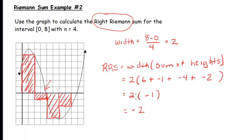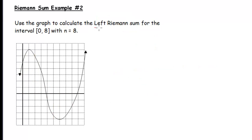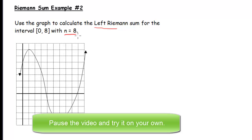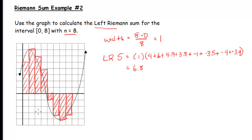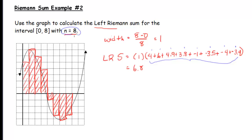Now let's change the number of rectangles to 8 and find the left Riemann sum with n equals 8. The left Riemann sum comes out to 6.8. The most common error is making sure you have the right number of values being added — this time there are 8 numbers, matching the 8 rectangles.